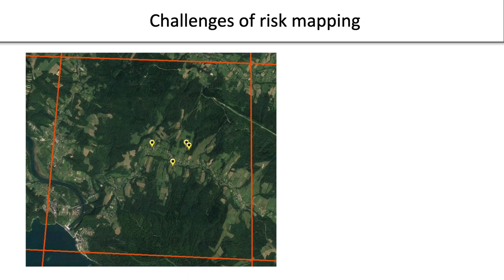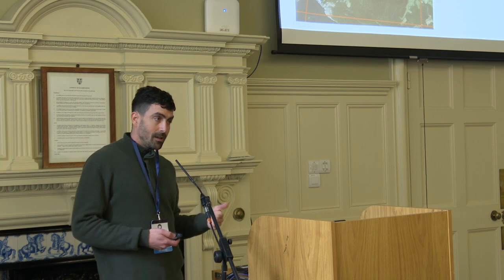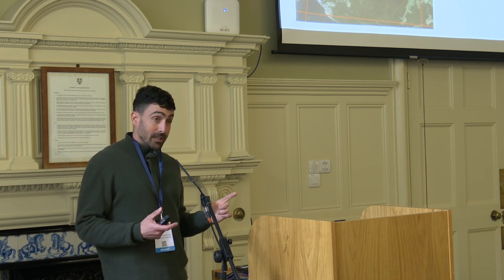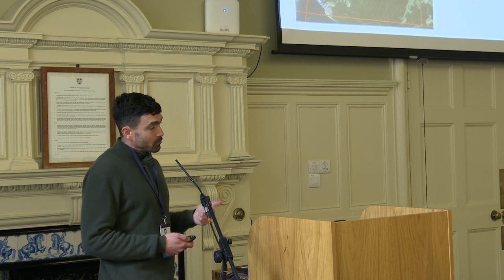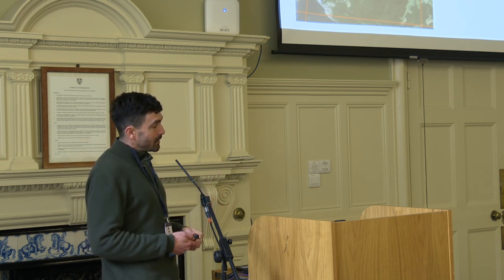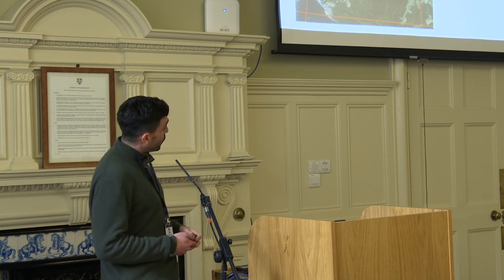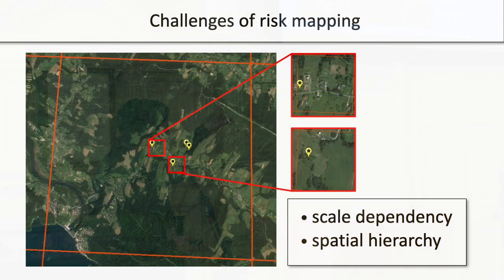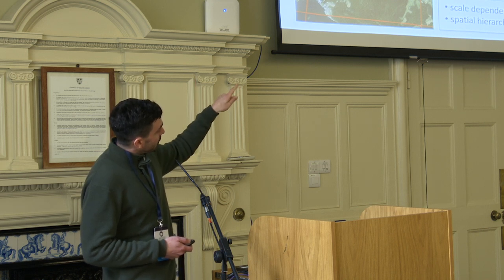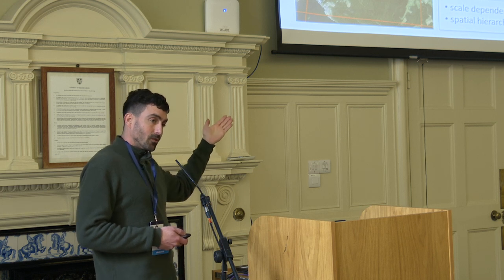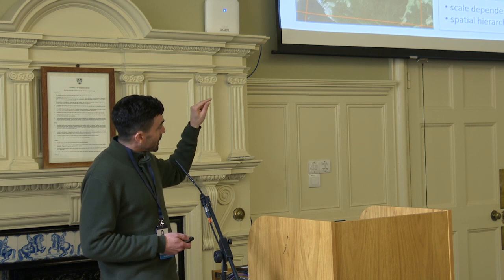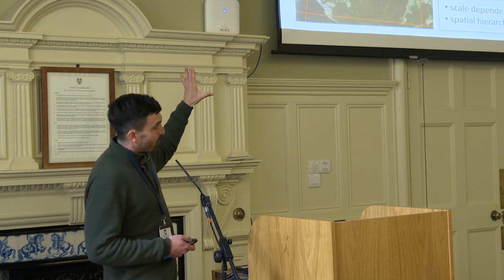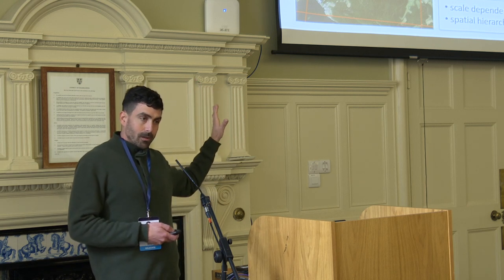If we understand wildlife damage as the use of anthropogenic food resources by animals, we can frame it within the theory of resource selection, which is a process understood to be scale-dependent and hierarchically spatial. Here we see the location of four apiary damage events by bears in the Polish Carpathians — the yellow dots. At the large scale, these four locations are surrounded by forests, so forest is a strong predictor. But at a finer scale, different predictors apply, yet we still need that broader forest context for the damage to occur at these particular locations.